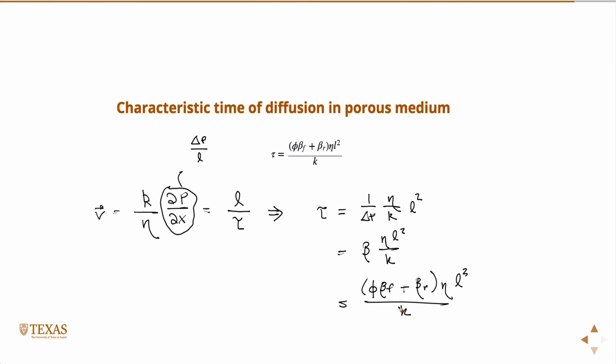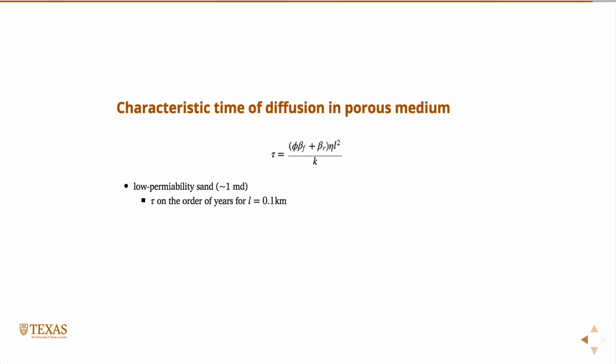And then Darcy's law with an interest in how long, what's a characteristic timescale for some characteristic length scale. So we can use this equation to estimate how long it takes for fluid to diffuse. So for a low permeability sand, which has one millidarcy, then tau is on the order of years for L equal to 100 meters. So 100 meters could be a reasonable size of a cap or sedimentary isolation. So on the order of years, so it only took a few years for the pore pressure to equilibrate. And in that case, it's just going to be well-connected and you're going to see hydrostatic pressures.